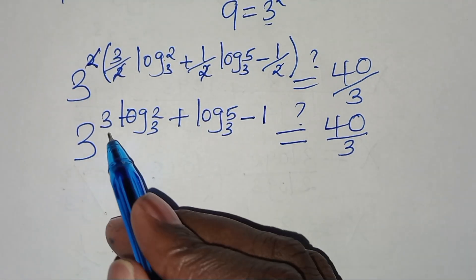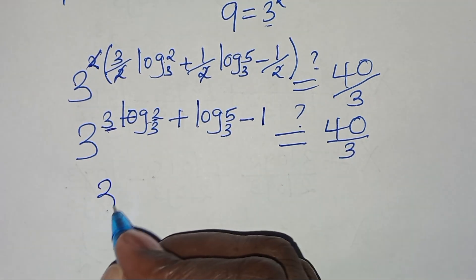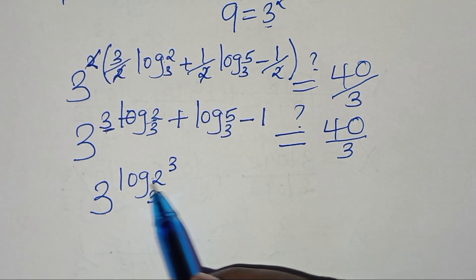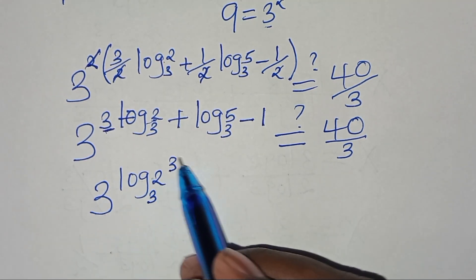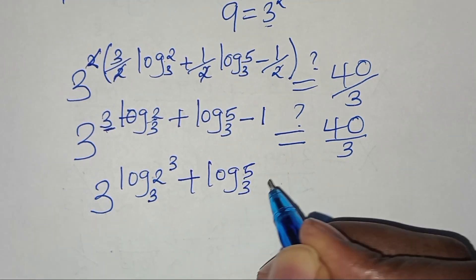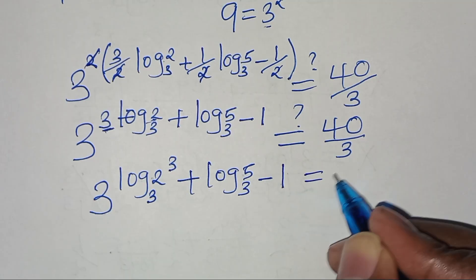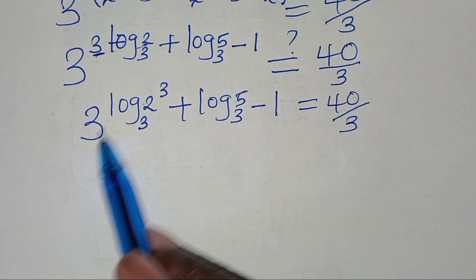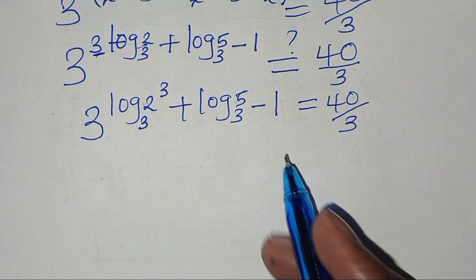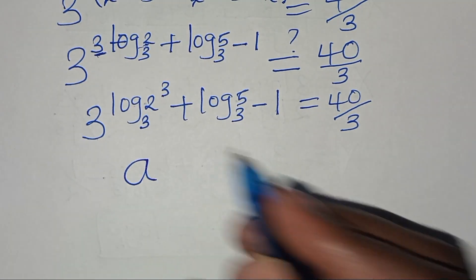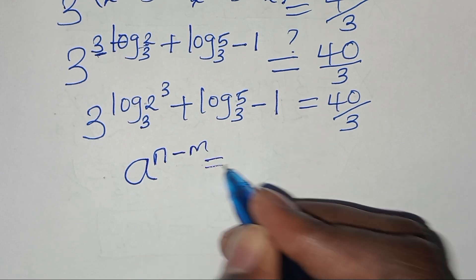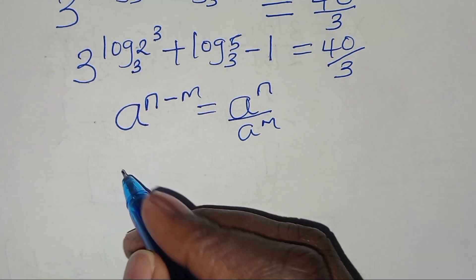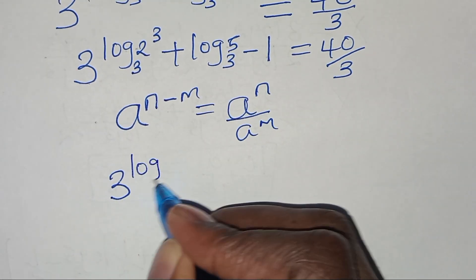Since 3 is in the base and the exponent involves a logarithm base 3, we can express this as 3 to the power of log₃(2 to the power 3), applying the exponent property. Similarly 3 to the power of log₃ 5 can be simplified. Now applying the property that m to the power log_m(a) equals a.